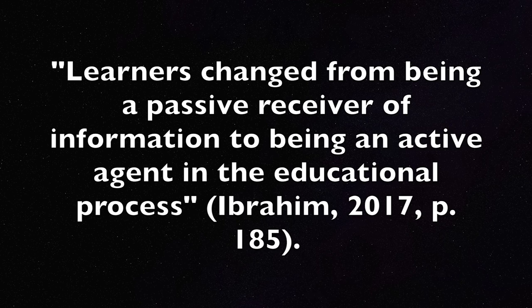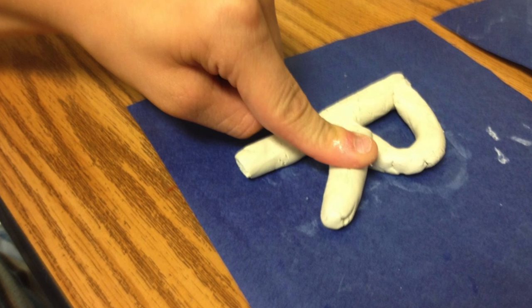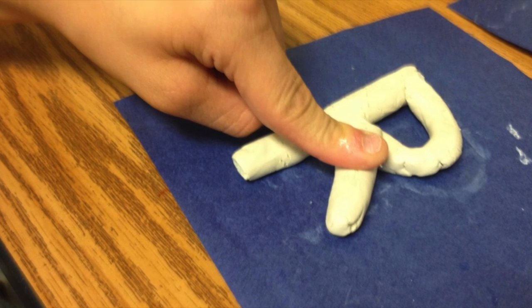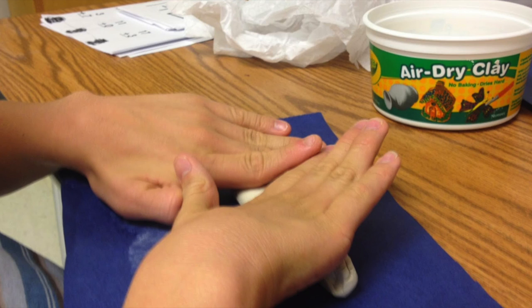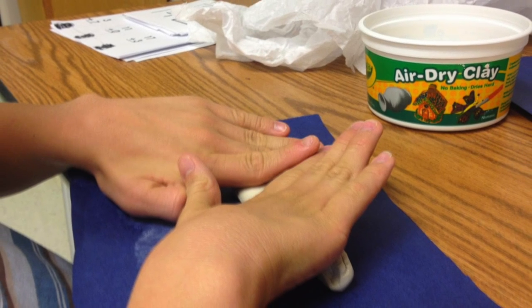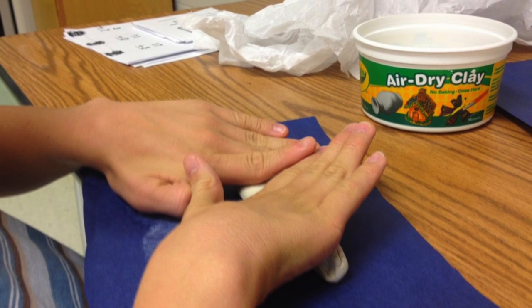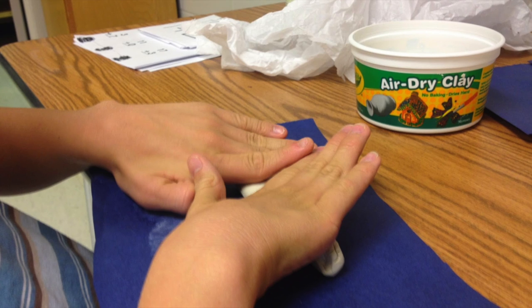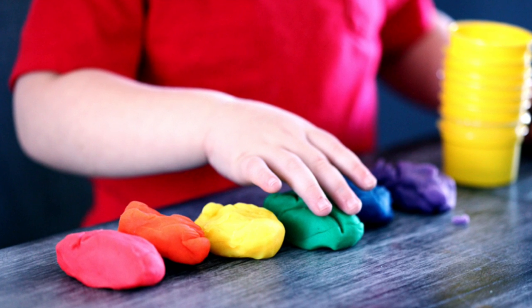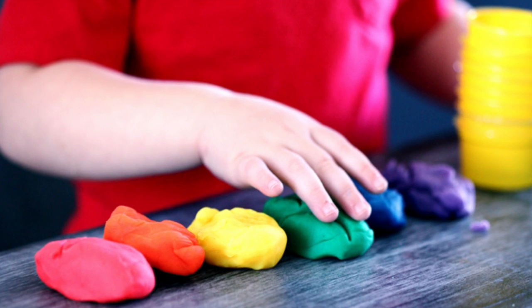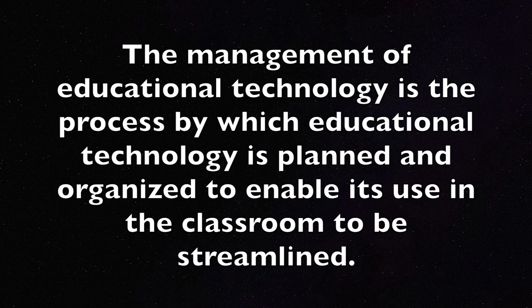When it comes to utilization, we must make practical and effective use of educational technology. Ibrahim, 2017, states that learners changed from being a passive receiver of information to being an active agent in the educational process. Therefore, the utilization of educational technology must allow students to be active learners. If we look at clay in an occupational therapy setting, we gain a better understanding of how its utilization aligns with educational technology. In occupational therapy, clay is used as an active way for patients to work their muscles to enhance muscle memory, aiding in recovery. Like the utilization of educational technology, clay is used practically and effectively to promote active participation by the user.